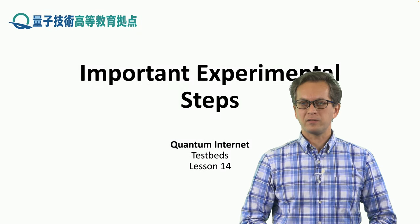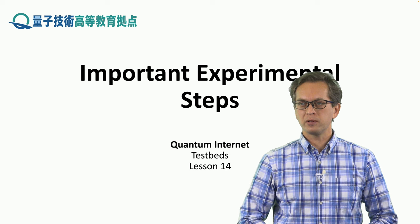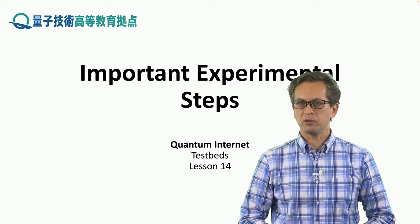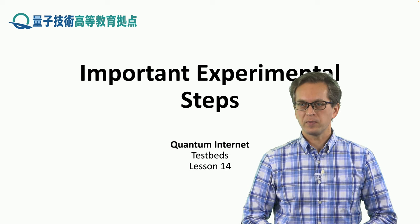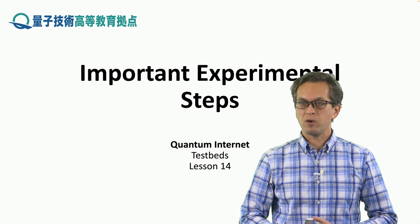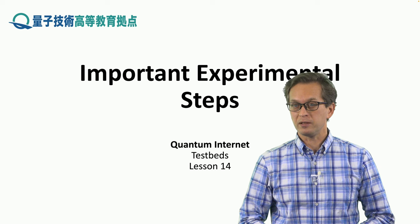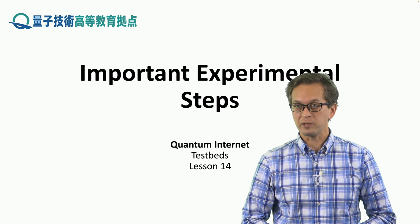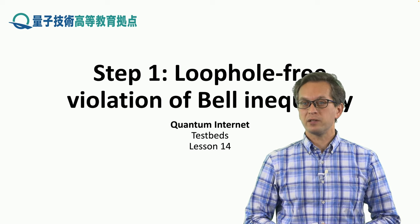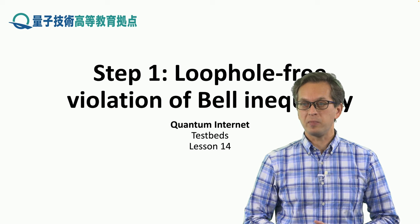Welcome to lesson 14. This lesson is on important experimental steps towards actually building quantum networks. We have talked about quantum networks in theory; now we will have two lessons where we talk about what was actually built and implemented in terms of experiments. We're going to begin with the first experiment in step one, and that's loophole-free violation of Bell inequality.